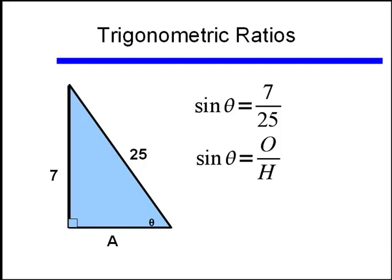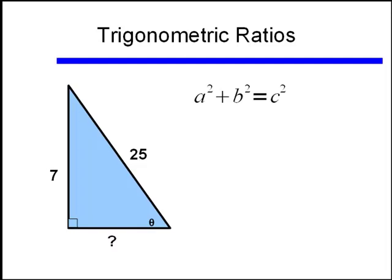Then we can see that the length of one of the legs, the leg opposite our angle theta, is 7, and the hypotenuse is length 25. As before we have a missing side, this time the missing side is the adjacent side, one of the legs of the right triangle.